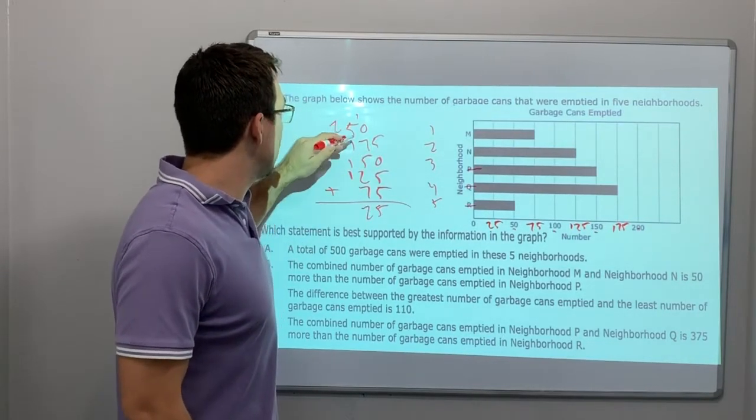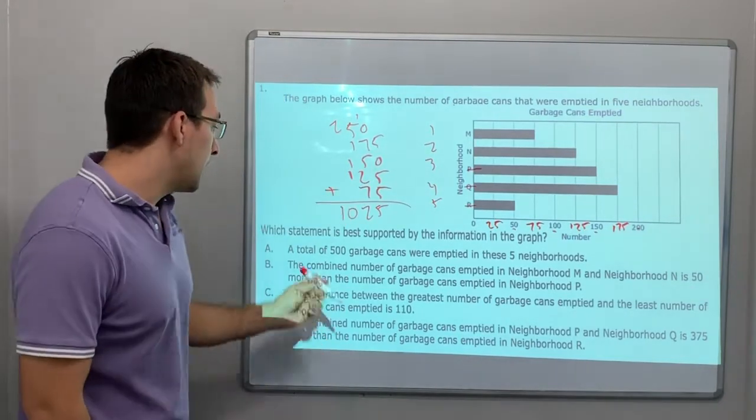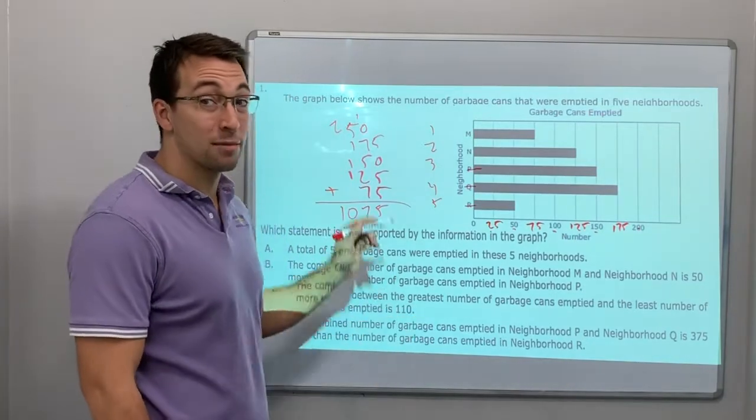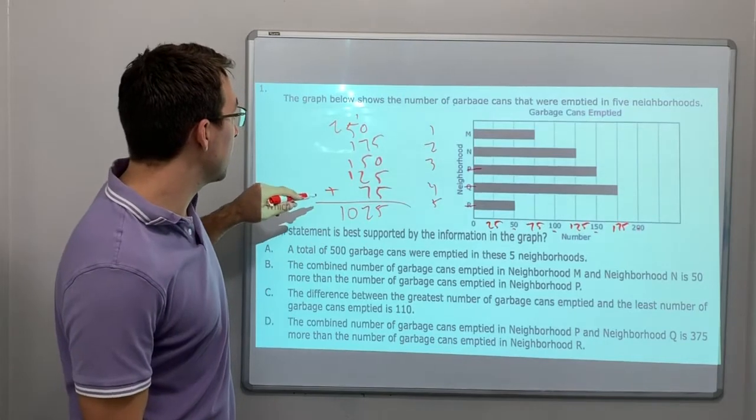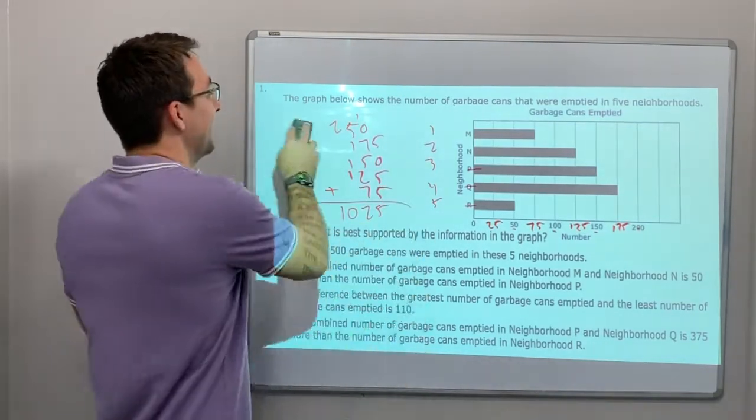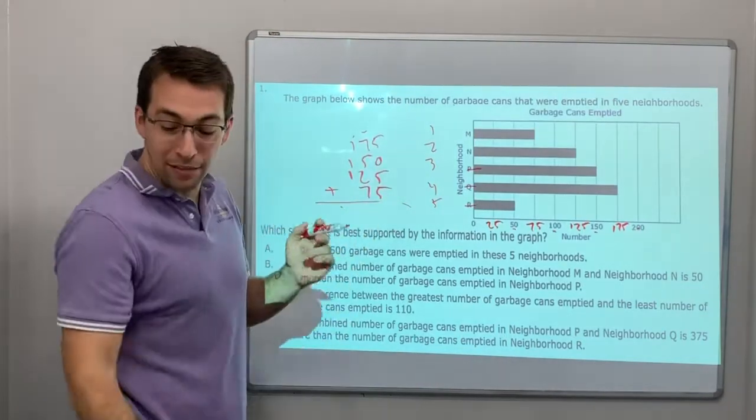And then 7, 8, 9, 10. Okay, a total of 500 garbage cans. No, that's more than 500. That is more than 500. No it's not. I'm sorry, I messed up. I didn't keep my place values in order.